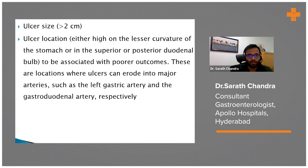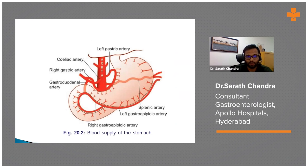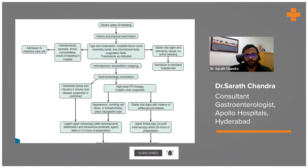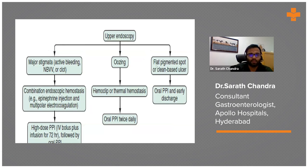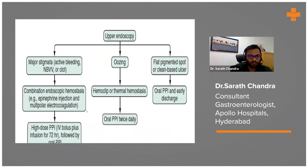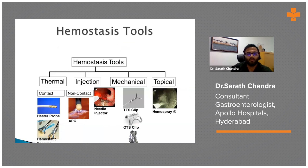Here you can see the blood supply of the stomach. The left gastric artery and gastroduodenal artery are the two areas where, if an ulcer is present, there is a high chance of bleeding. For upper GI bleeding, after physical examination and stabilization, we start PPIs and do an endoscopy, then plan accordingly. If it is a flat pigment spot or clean-based ulcer, only oral PPI and early discharge. If oozing, we can do clipping or thermal therapy followed by twice-daily PPIs. If there is major stigmata of active bleeding, we can do dual treatment like epinephrine and either thermal or APC.